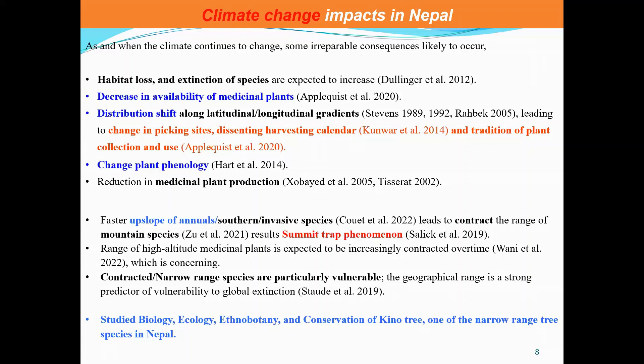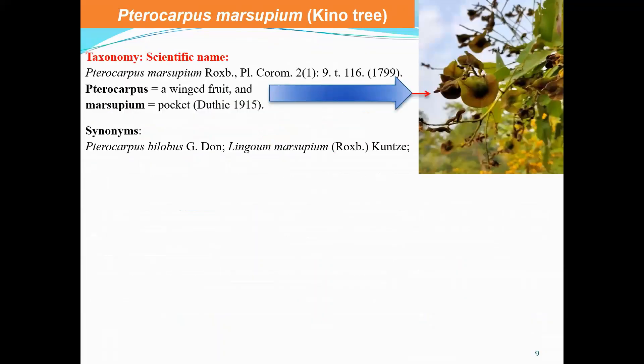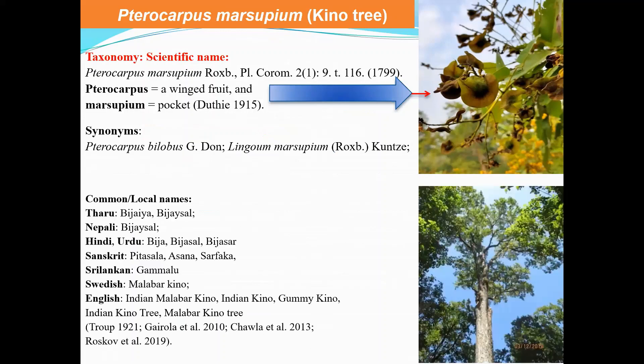Today I am talking about one such narrow-range species — the Kino tree. This is Pterocarpus marsupium, from the family Fabaceae. You can see the winged fruit in the image. The common names and synonyms of this species are shown, including names used in local and regional contexts.